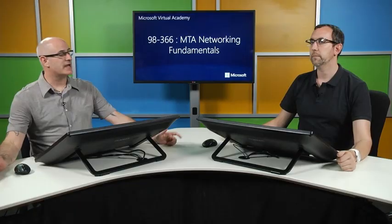Layer one, the physical layer, defines the physical and electrical media for data transfer. Whether wired or wireless, you need standards. For wireless: what signal strength, what signal channel? For wired: what type of cables, what type of jacks? Physical layer components include cables, jacks, patch panels, punch blocks, and hubs.